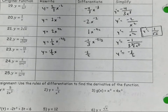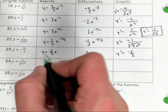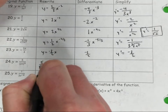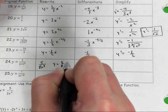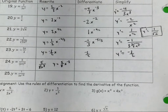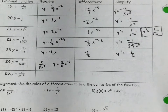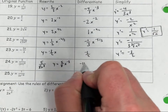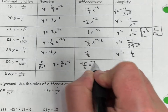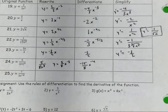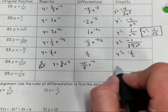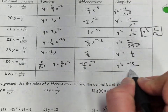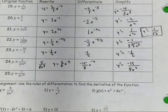Number 24 — do you think you need to cube everything in that denominator before you do anything? Yes. So I rewrite that as 5 over 8x cubed, then as y equals 5 eighths x to the negative 3. Negative 3 times 5 eighths is negative 15 over 8. Negative 3 minus 1 gives negative 4. So y prime equals negative 15 over 8x to the 4th.